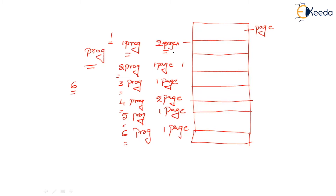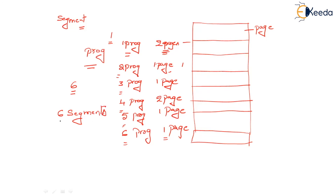The first program is of two pages, so I am now introducing the concept of a segment. What is a segment? A segment is a logical entity of memory which is required to store a program. The size of the segment is nothing but the size of the program it contains. So the first segment size is two pages, second is one page, third is one page, fourth is two pages, fifth is one page, and the sixth segment is one page. So altogether, the number of segments at this point is six segments, with each segment containing a program.